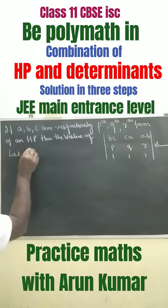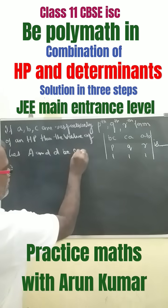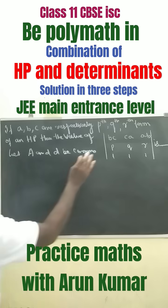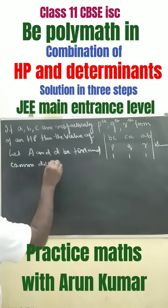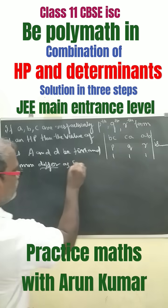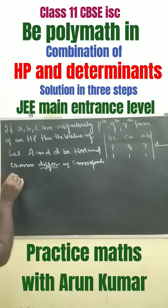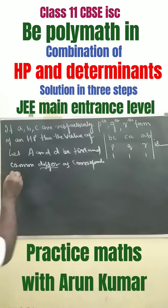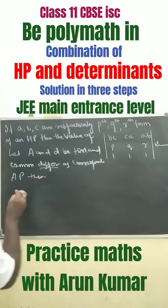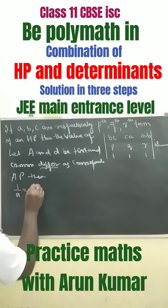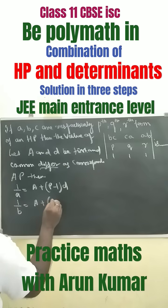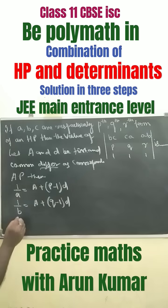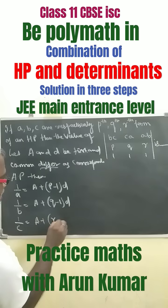Let A and D be the first term and common difference of an arithmetic progression. Then we have 1/A equals A plus (P minus 1) into D, 1/B equals A plus (Q minus 1) into D, and 1/C equals A plus (R minus 1) into D.